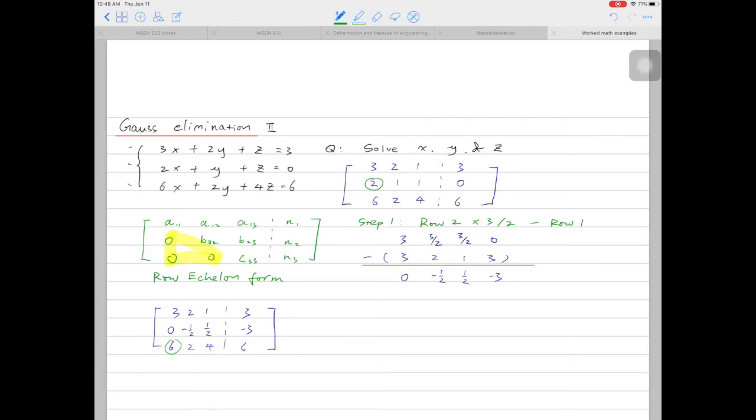The next step is to remove the first entry of the third row. What we can do is to use row 3, minus 2 times row 1. Row 3 is simply 6, 2, 4, 6, and 2 times row 1 is 6, 4, 2, 6.